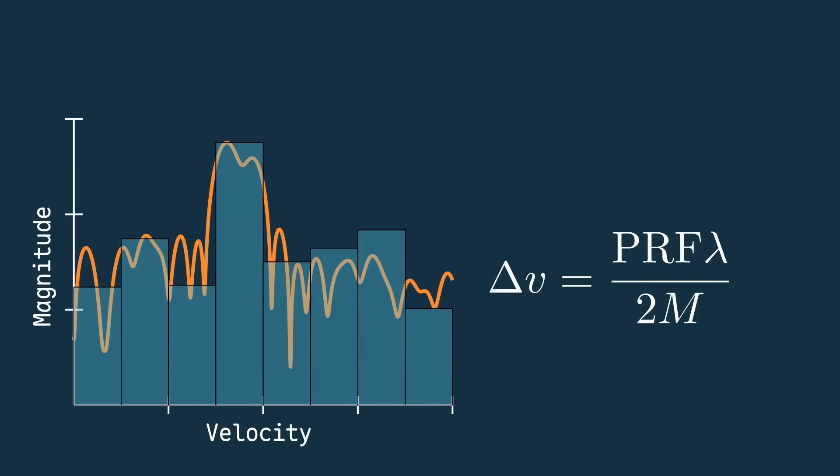And finally, we just found the minimum difference in velocity between targets we can detect is the transmit wavelength times the pulse repetition frequency over 2 times the number of pulses we transmit.